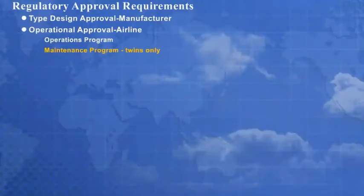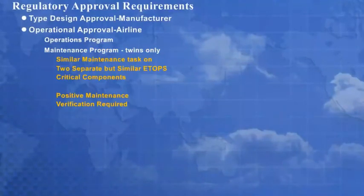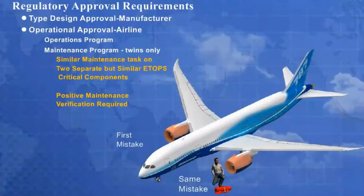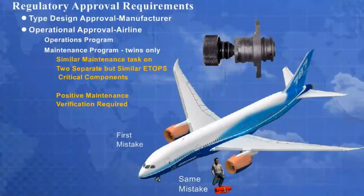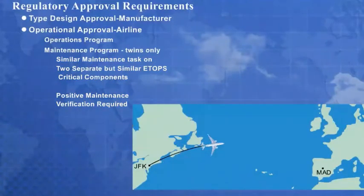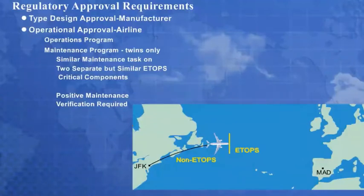An important element of an ETOPS maintenance program is the similar task concept. If a similar task has been performed on two separate but similar ETOPS critical components, positive maintenance verification is required. This verification ensures that the problem has been resolved and that identical maintenance errors have not been introduced to both components. Examples of this are improper installation of O-rings on a chip detector on both engines during routine maintenance, or the removal and replacement of both the left and right engine fuel control modules. For cases where ground maintenance verification cannot be confirmed on an ETOPS critical component, in-flight verification may be performed during the non-ETOPS portion of a revenue flight.